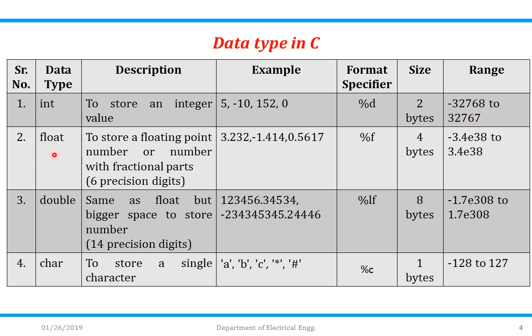Next one is float. It is used to store a floating point number, for example 3.232, minus 1.414, 0.5617. Its format specifier is %f with size of 4 bytes. Its range is from minus 3.4E38 to 3.4E38.